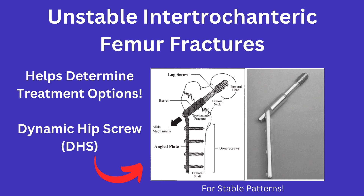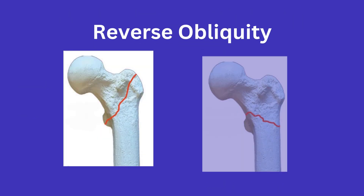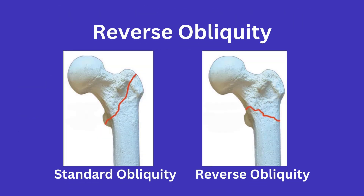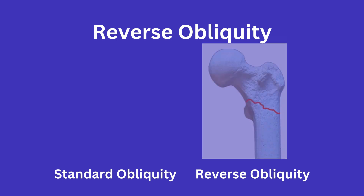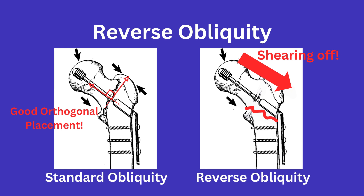First up we have the reverse obliquity fracture. Normal obliquity can be seen here in the image on the left, with a reverse pattern being seen on the right. With the reverse obliquity, you can imagine that with a DHS your screw is parallel to the fracture line instead of the desired orthogonal placement we have discussed in prior videos.